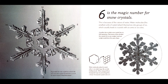Six is the magic number for snow crystals. This is because of the nature of water. Water molecules — the smallest units of water — attach themselves into groups of six, which usually leads to crystals with six arms or six sides. A perfect star or plate snow crystal has six-fold symmetry. That means if you divided the crystal into six pie wedges, each wedge would have the same shape. Water molecules attach to each other in six-sided rings, like six kids holding hands. When many of these hexagonal rings are joined together, a larger hexagonal crystal is formed. If you think of a star crystal as a clock, the arms can point to two, four, six, eight, ten, and twelve o'clock — only those times.